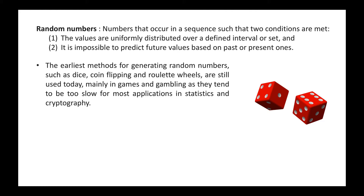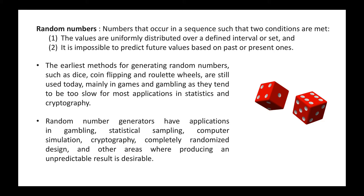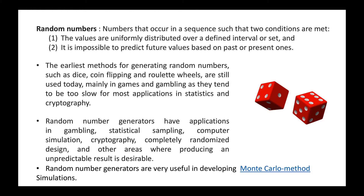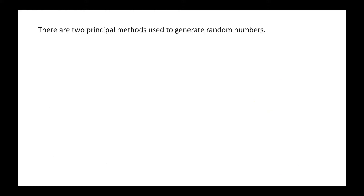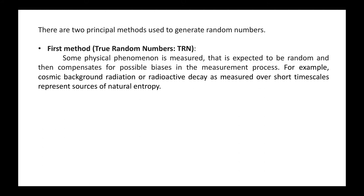These methods are still used today mainly in games and gambling, but they tend to be slow for most applications in statistics, cryptography, and computer science. Random number generators have applications in gambling, statistical sampling, computer simulation, cryptography, completely randomized design, and other areas where producing an unpredictable result is desirable. Random number generators are very useful in developing Monte Carlo methods and simulations. Principally, there are two types of random number generators.